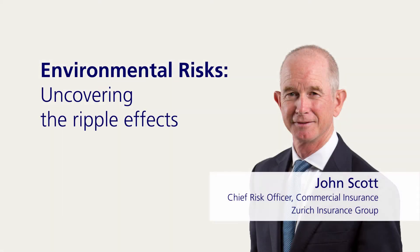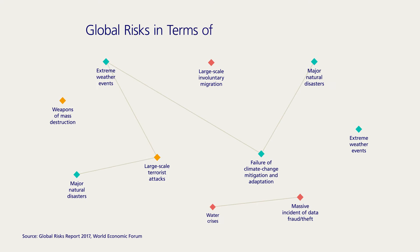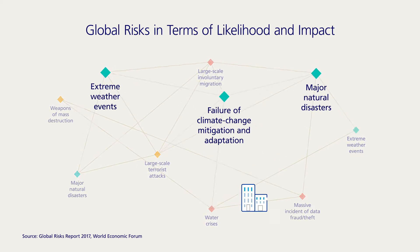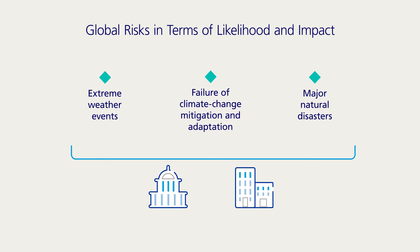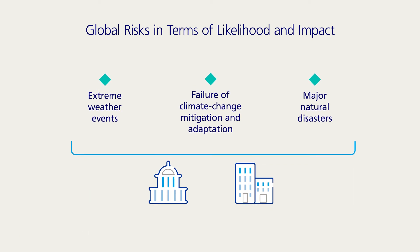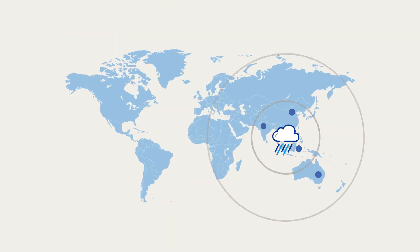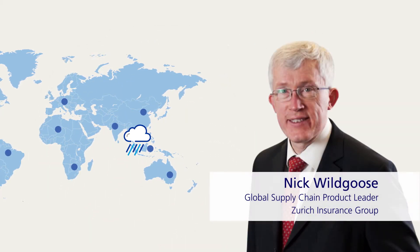Environmental risks are one of the five key challenges facing the world today, according to the Global Risk Report 2017. Many of them are closely interconnected with other major risks. Global businesses and governments have a strong interest in developing greater resilience against them. So how does an environmental event in one part of the world lead to disruption in another? Nick Wildgoose explains.